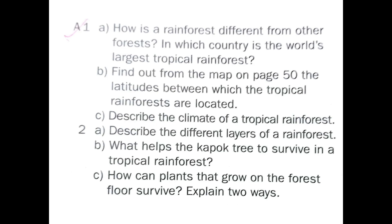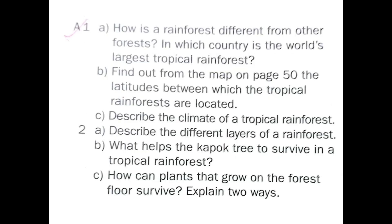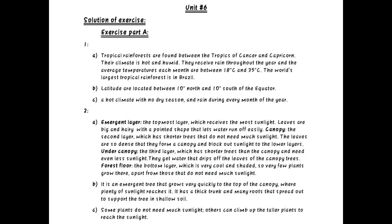Next, find out from page number 50, from the map of the tropical rainforest of the world, the latitudes between which the tropical rainforests are located. Latitudes are located between 10 degrees north and 10 degrees south of the equator. Describe the climate of a tropical rainforest — the answer is: a hot climate with no dry season and rain during every month of the year.